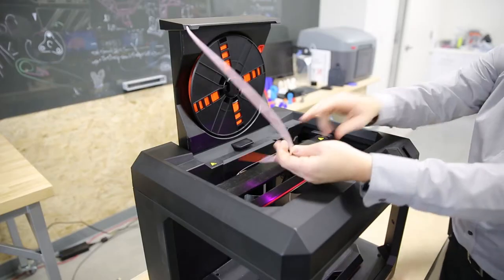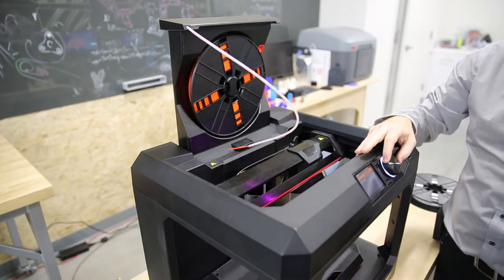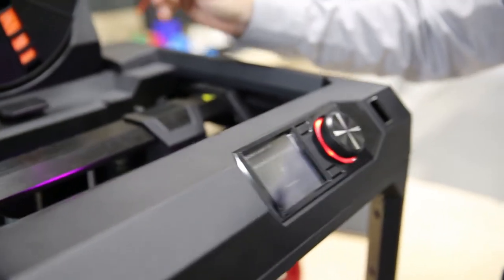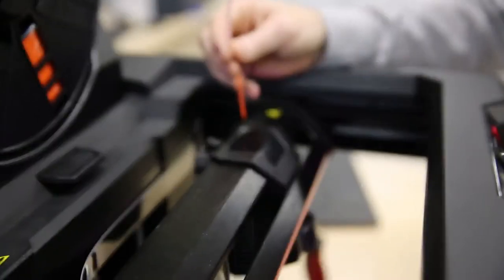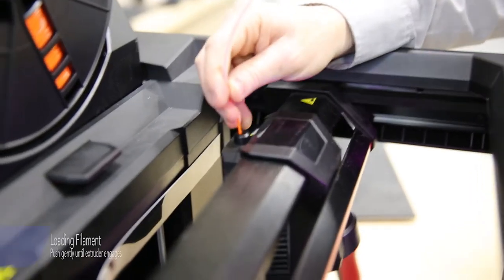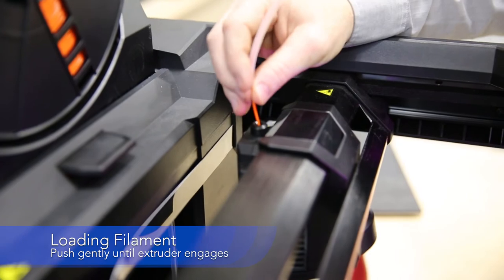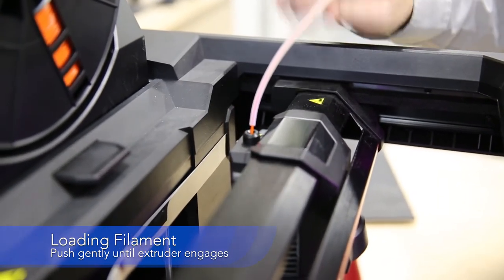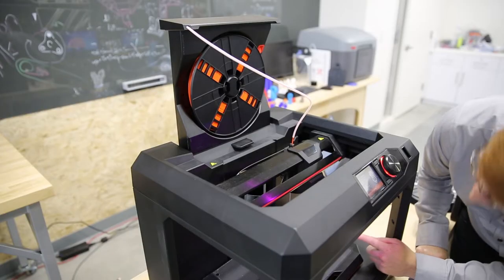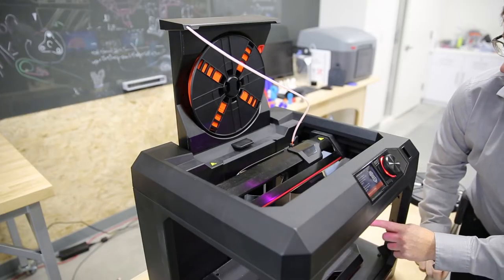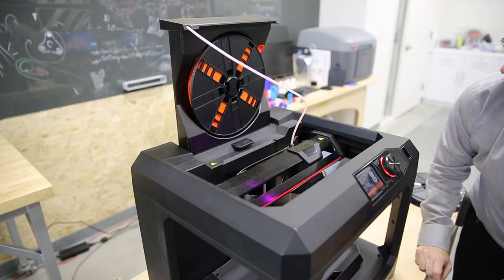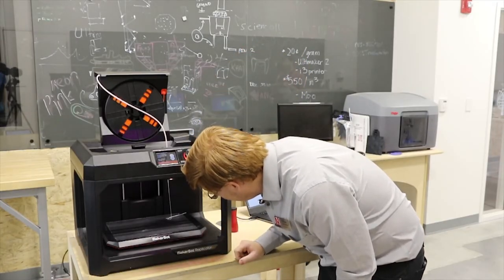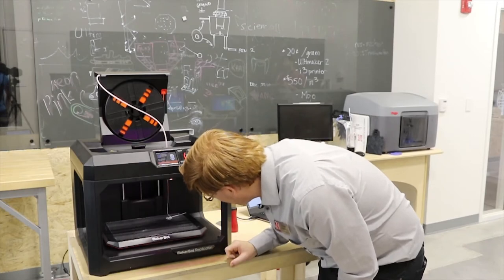And now, on my screen, I will choose load filament. Again, it will heat the extruder up to the appropriate temperature, and you'll follow the on-screen instructions. So it says to load the filament, and I will insert until it begins pulling on its own, and I will let it pull. Then I'm going to watch down here until my filament extruded turns to the orange that we need. It's coming out. I'm watching, and now it turned orange.